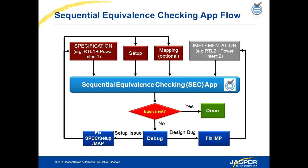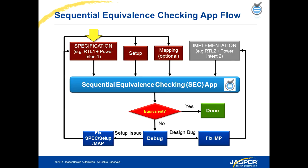SEC can help you reduce a lot of time involved in such verification. Here's how the SEC app flow looks — quite straightforward. You do a simple setup, which includes mapping of the inputs, outputs, black box inputs, and black box outputs, and maybe other kinds of signals if required. You load one version of the design and the other version to the tool, and the SEC app takes care of generating all the required assertions and assumptions, which can be reused many times as you keep making more fixes or changes to your existing design.